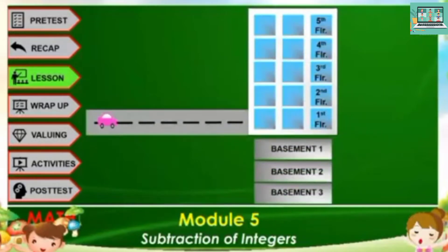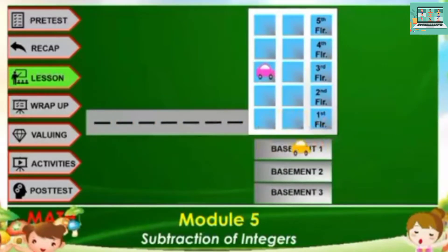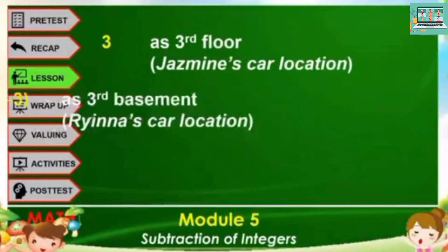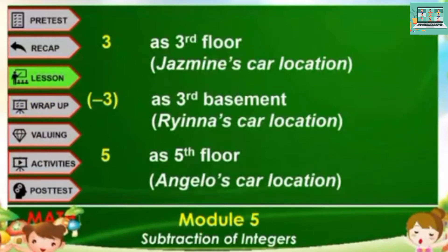Three friends agreed to meet at the mall to buy needed materials for their civic organization. On the way to the mall, they all brought their own cars. Jasmine parked her car at the third floor of the parking area. Rihanna arrived second and got her parking at the third basement. Angelo who arrived last had his parking at the fifth floor. The given in the problem can be represented as: positive 3 for the third floor (Jasmine), negative 3 for the third basement (Rihanna), and positive 5 for the fifth floor (Angelo).